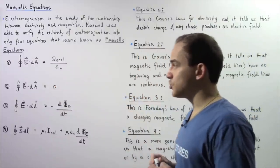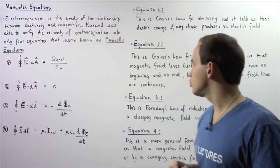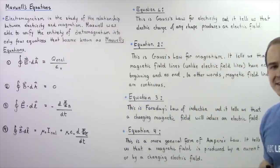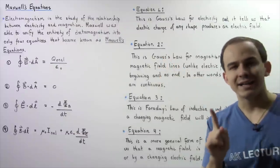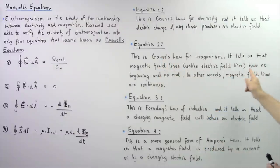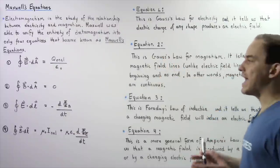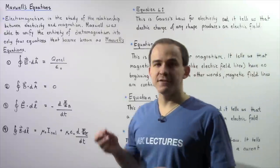Equation two is known as Gauss's law for magnetism. It tells us that magnetic field lines, unlike electric field lines, have no beginning and no end. That is, magnetic